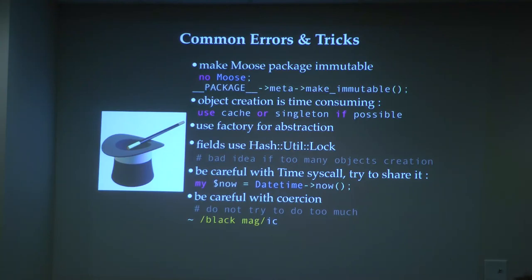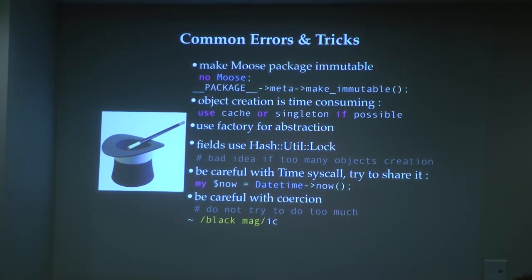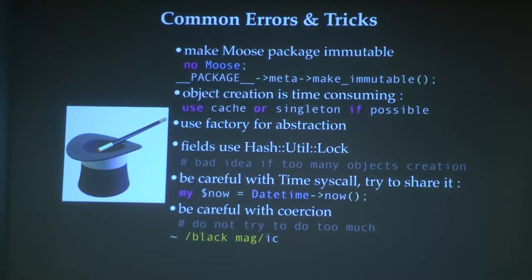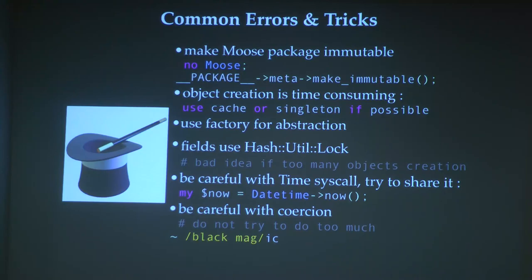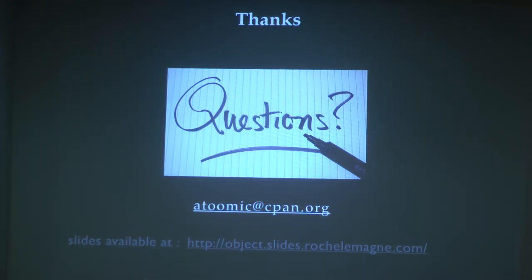Some common rules: if using Moose, make your object immutable. Think about using singletons and factories when possible. For Fields, mock your lock_keys to disable it in production. Be careful about syscalls like time. Coercions are very good but can become very ugly if you push everything into coercions. That's all — thank you.